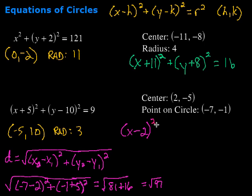Then, plus y minus k. In this case, we've got negative 5. So, minus negative 5 would be plus 5 squared. And that's equal to my radius squared. So, if my radius is the square root of 97, if I square that, I get just 97. So there's my equation.